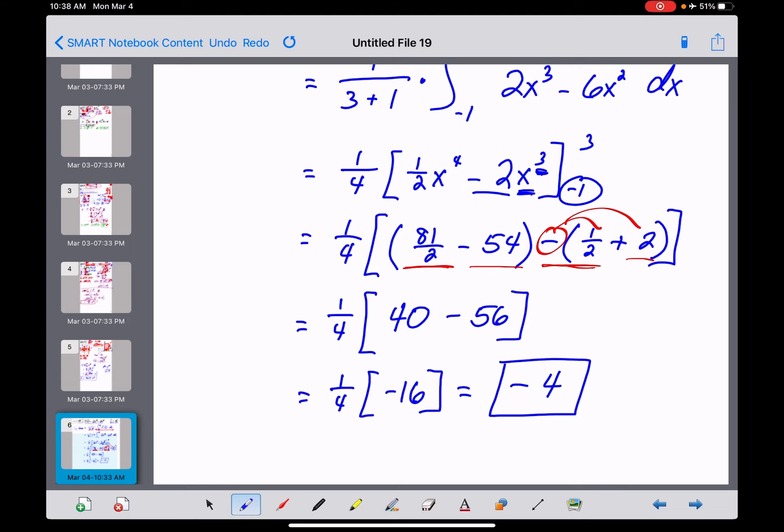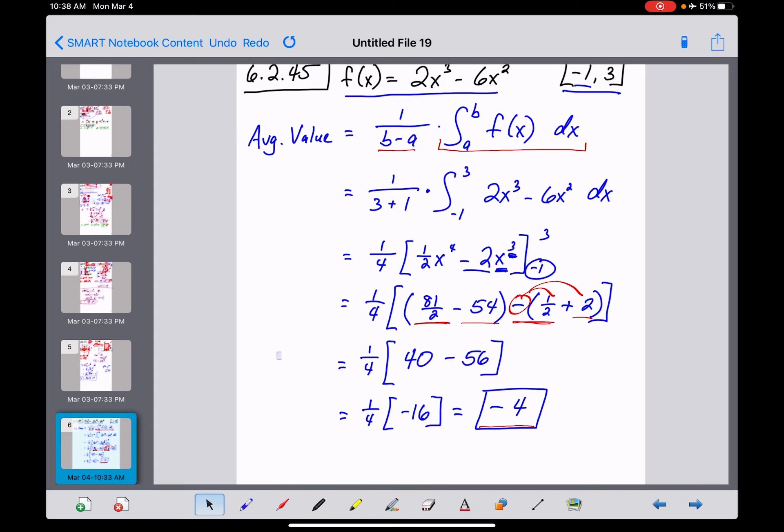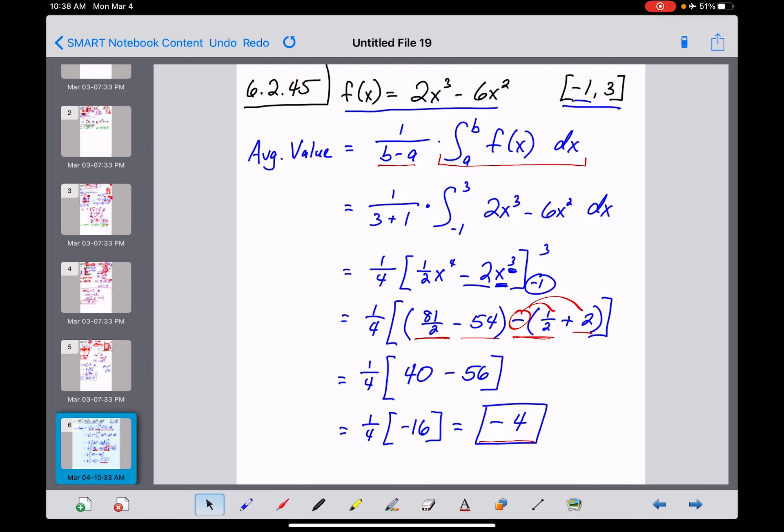So let me check the solutions manual here real quick on problem number 45. And yeah, negative 4 was their answer. The fact that this average value is negative tells you that the majority of this region needs to fall below the x axis in order for its average value to actually be negative. So that's how we would handle number 45.